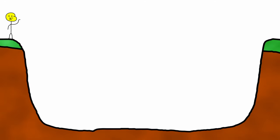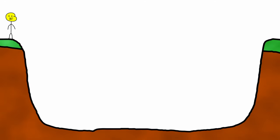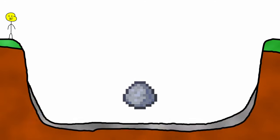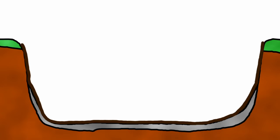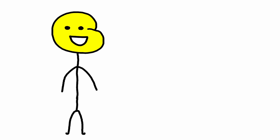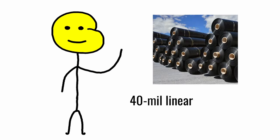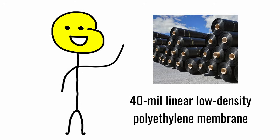First, a huge area is dug out. This is where the trash will be thrown in. Then they fill in about two feet of it with clay. Then they throw on a big plastic liner. And I know what you're asking. And yes, it is a 40 mil linear low density polyethylene membrane. Thank you for asking.